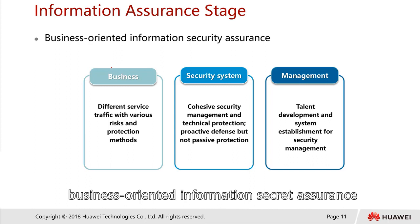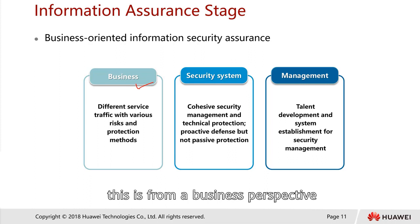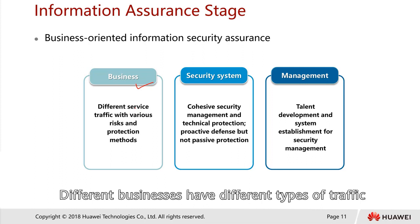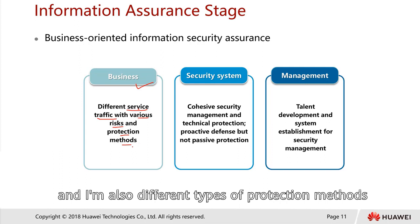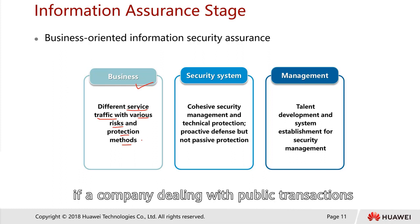When we talk about business-oriented information security assurance, different businesses have different types of service traffic. Therefore there could be different kinds of risk and different types of protection methods. For example, a company dealing with e-shopping needs to ensure the payment transaction is secure for clients.